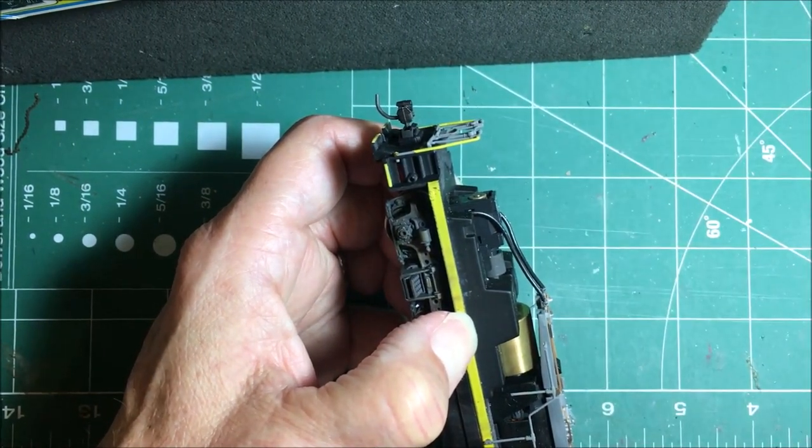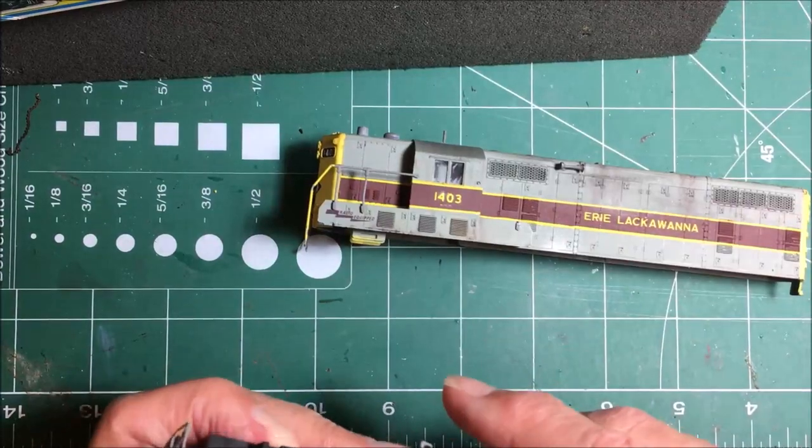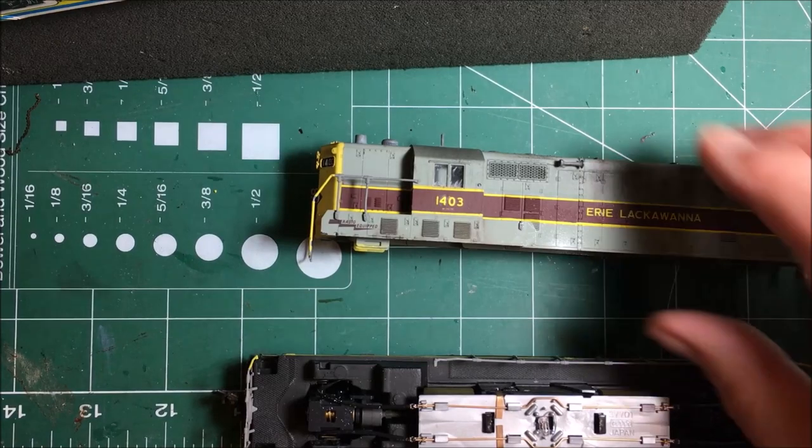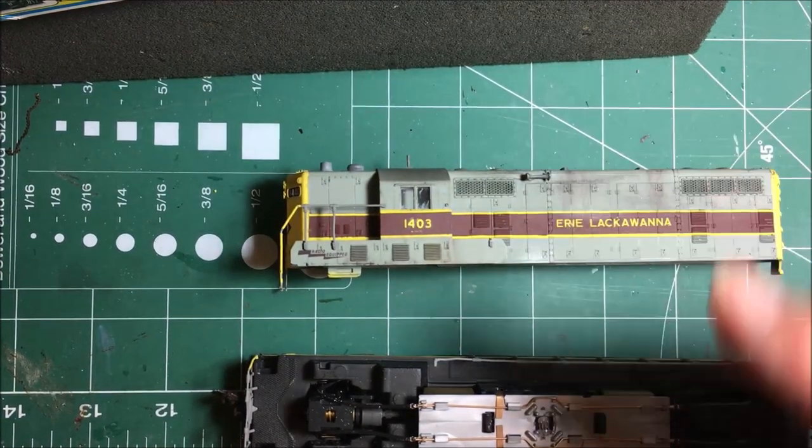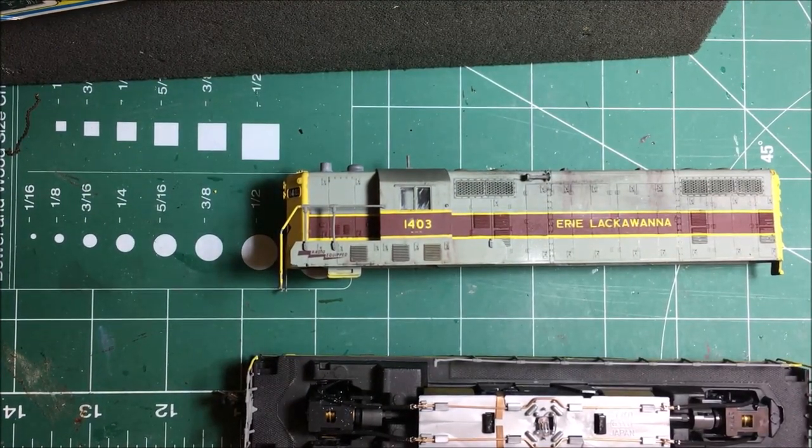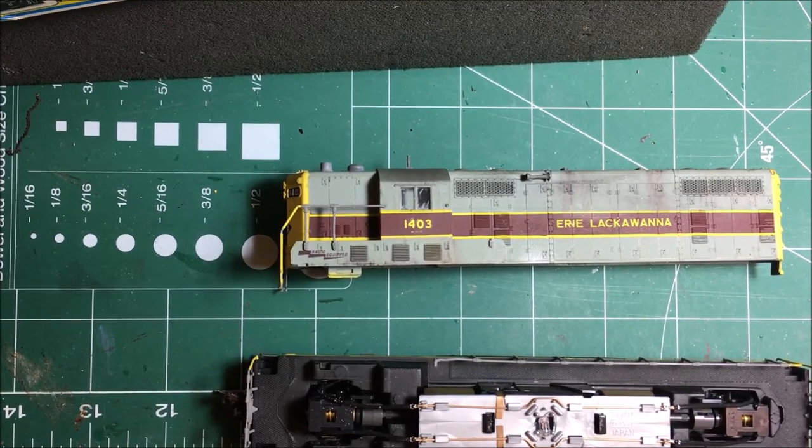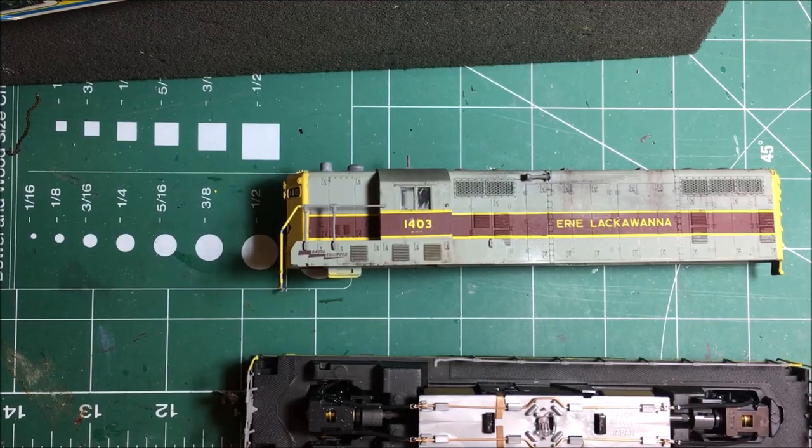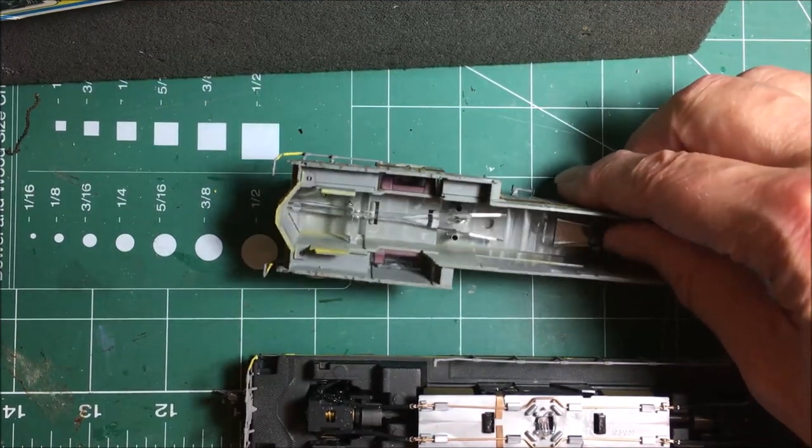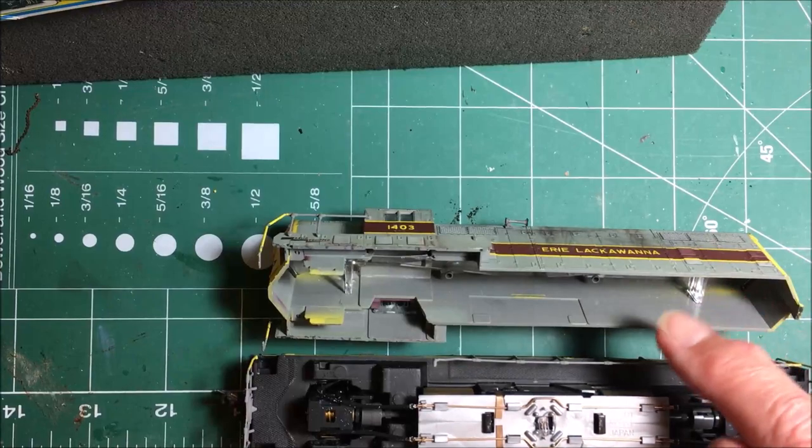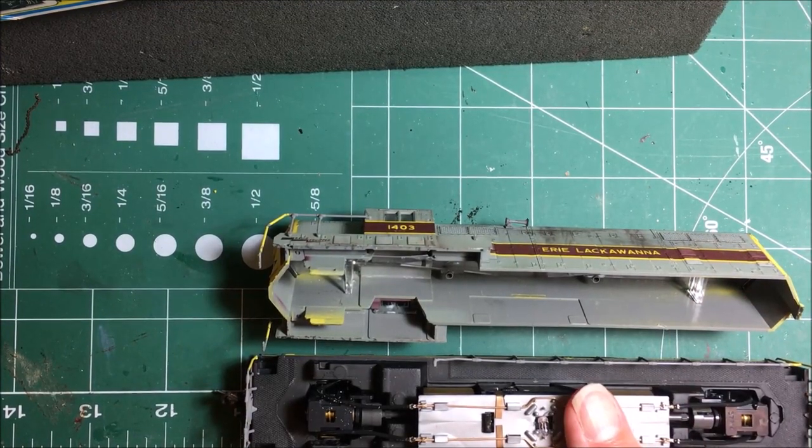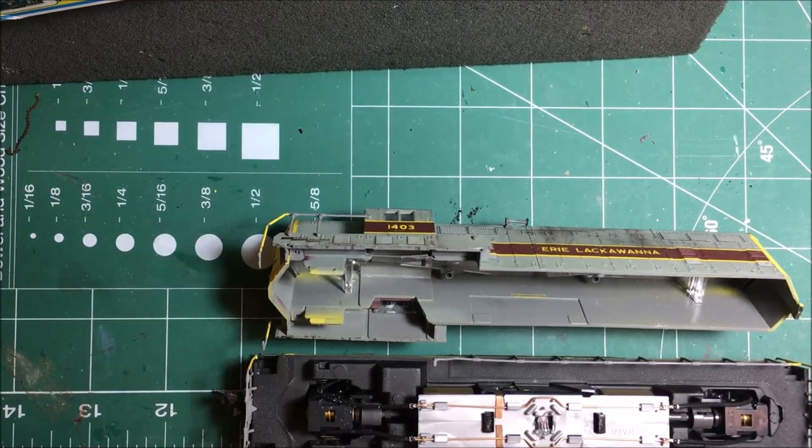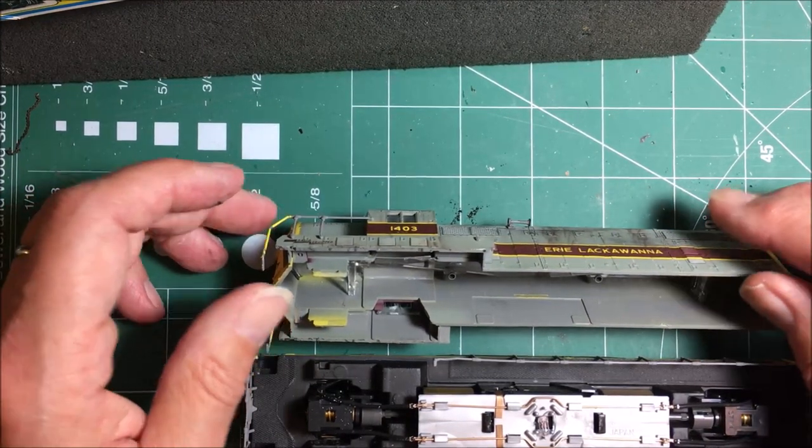So I like to look at this as being done in stages. Stage one is tearing things apart, taking the shell off. But really there's three main stages: I've got to prepare the shell, I've got to prepare the chassis, and I have to stuff everything back together again.